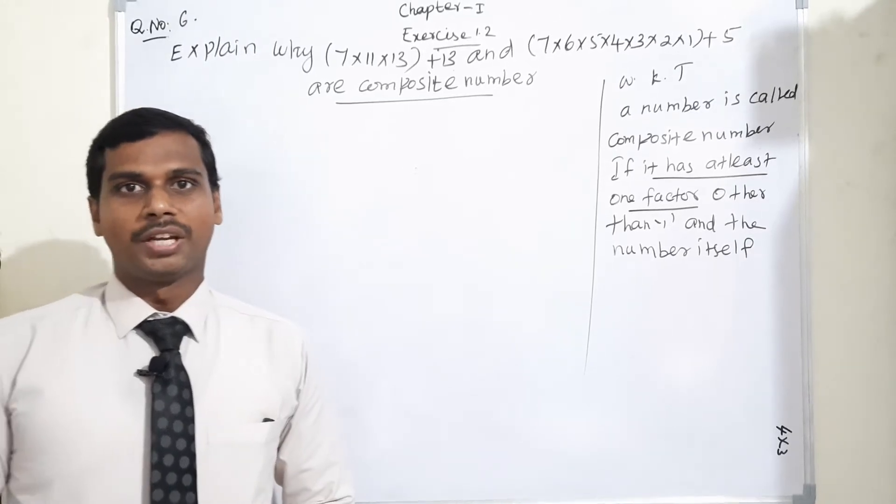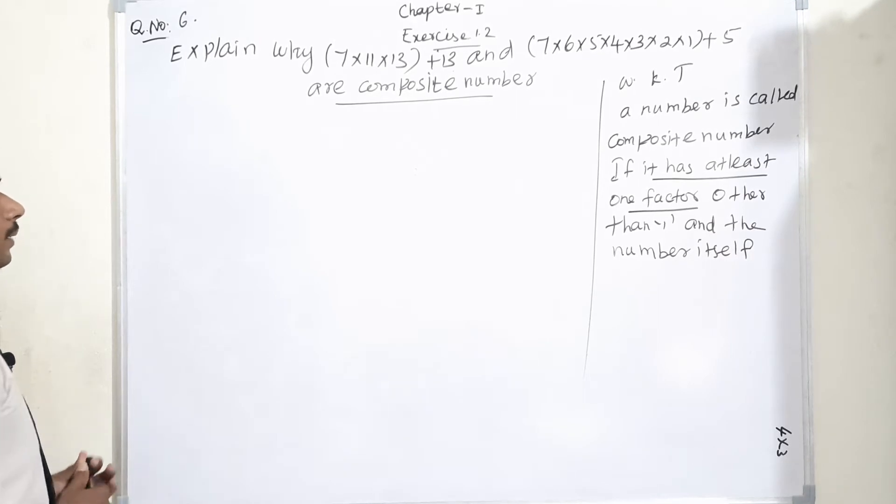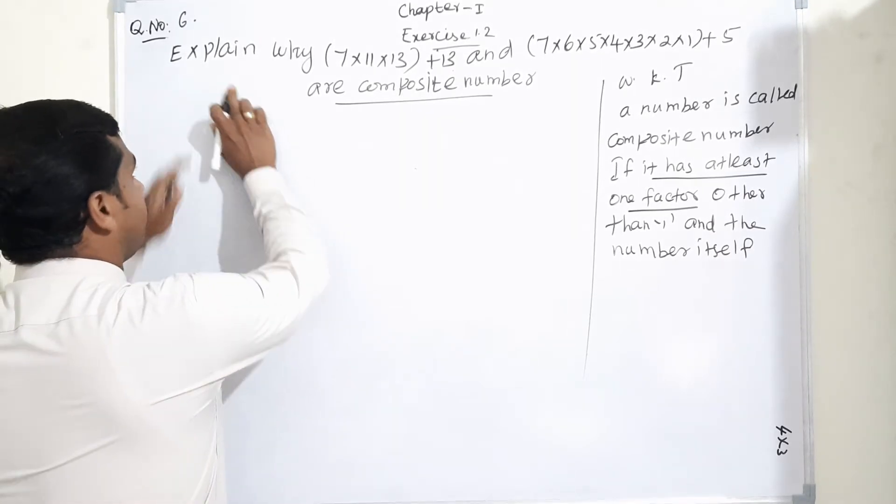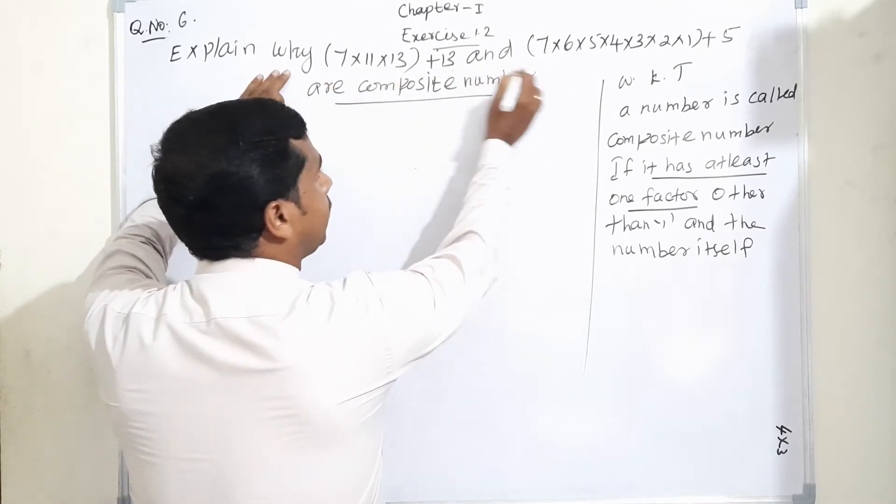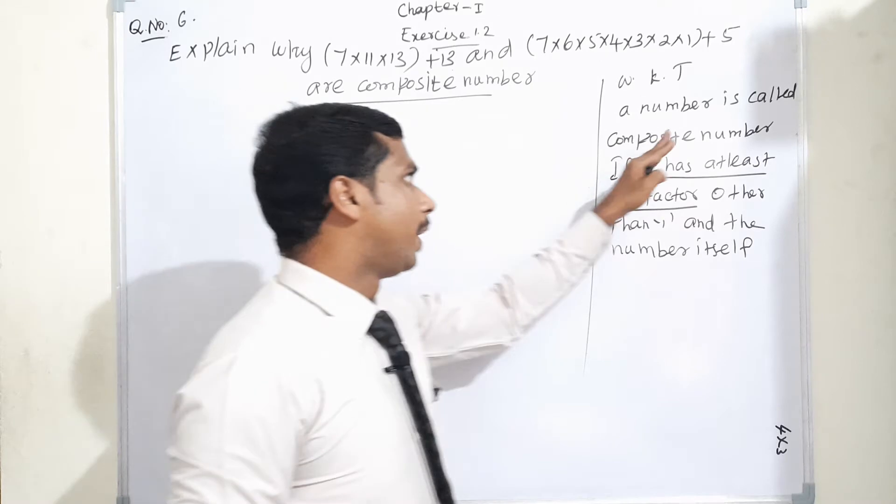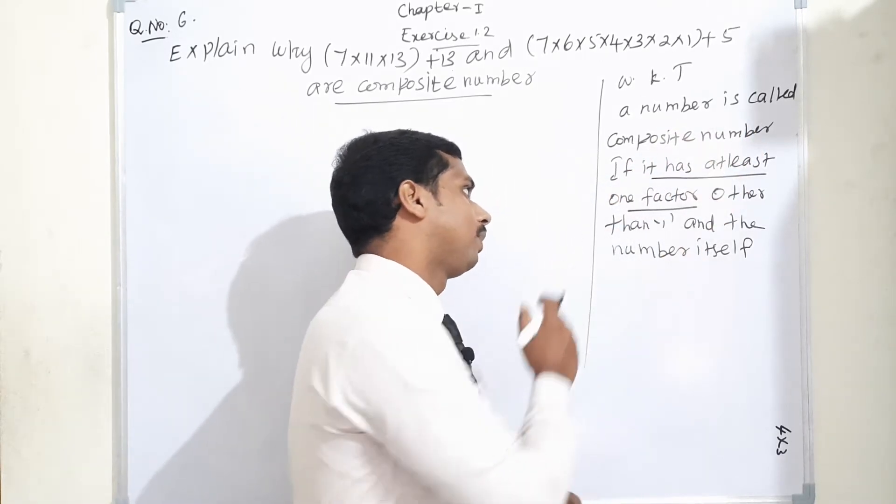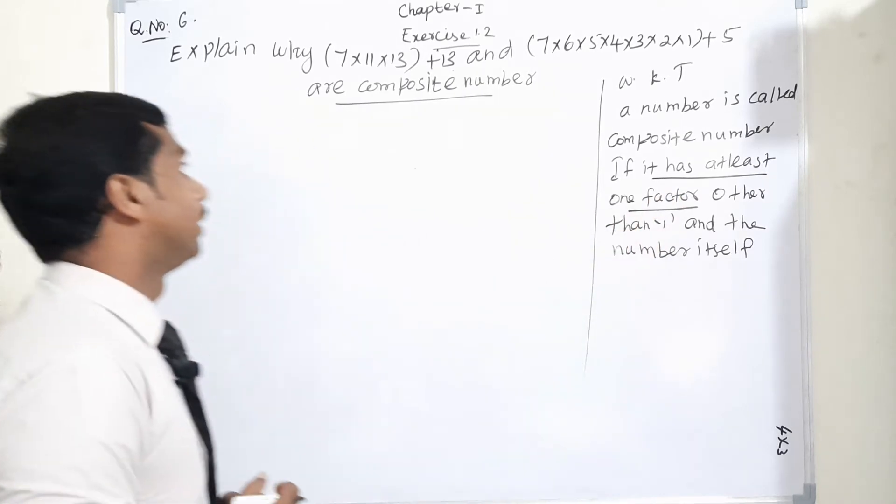Good evening everyone, welcome to Tenimax. Now, I am moving to exercise 1.2 question number 6. We have to explain why two conditions are composite numbers. What is the meaning of composite number? We know that a number is called a composite number if it has at least one factor other than one and the number itself.